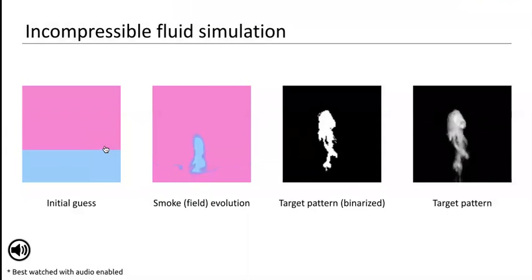We also simulate incompressible fluids such as smoke. In this experiment, we optimize for the initial velocities of smoke particles so as to form a desired binary target pattern shown in the third column.